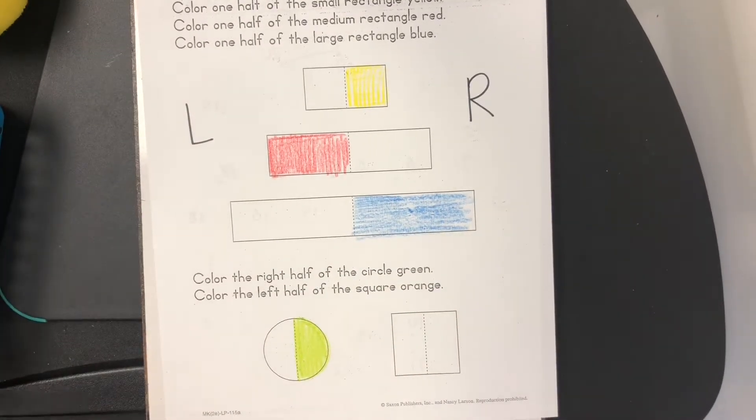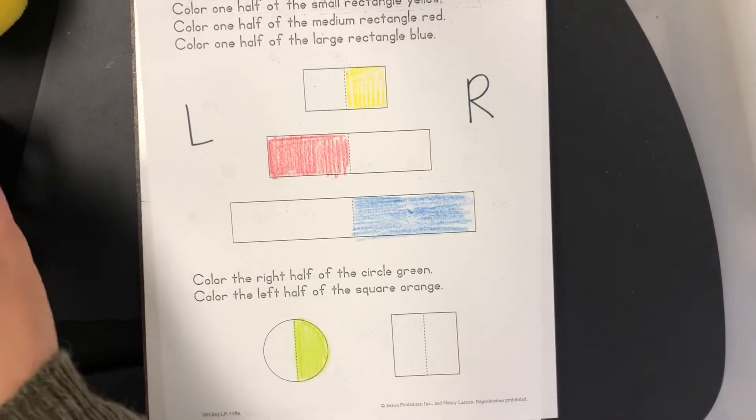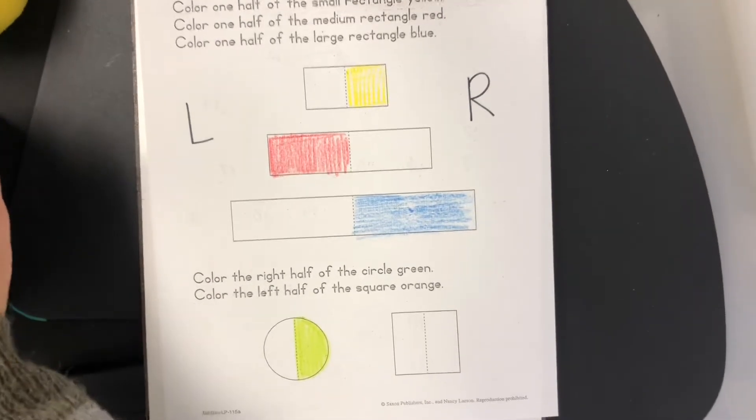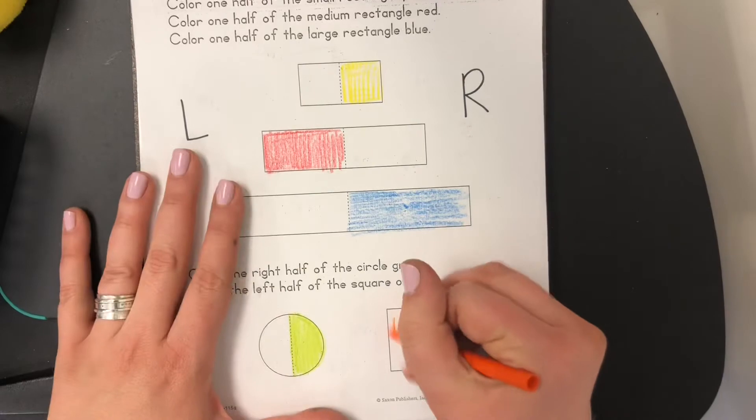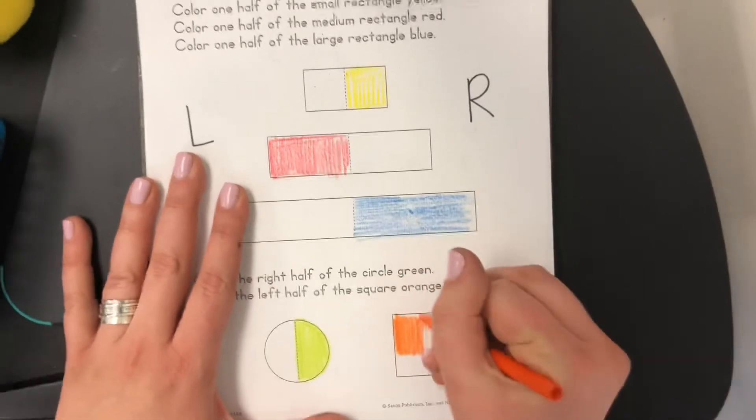Then color the left half of the square orange. Left half. So that's the opposite of what we just did on the circle. Left half.